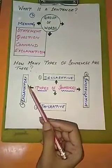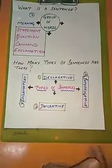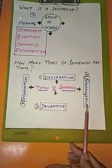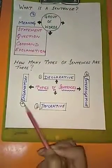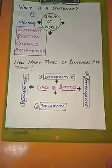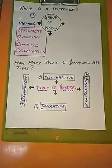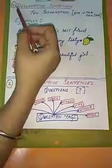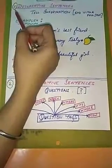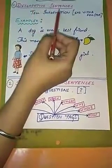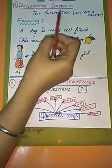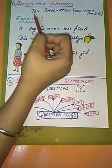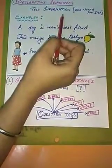So there are four types of sentences: first is declarative, second is interrogative, third is imperative, and fourth is exclamatory. Now let's understand each of them. First, declarative sentences. What are declarative sentences?